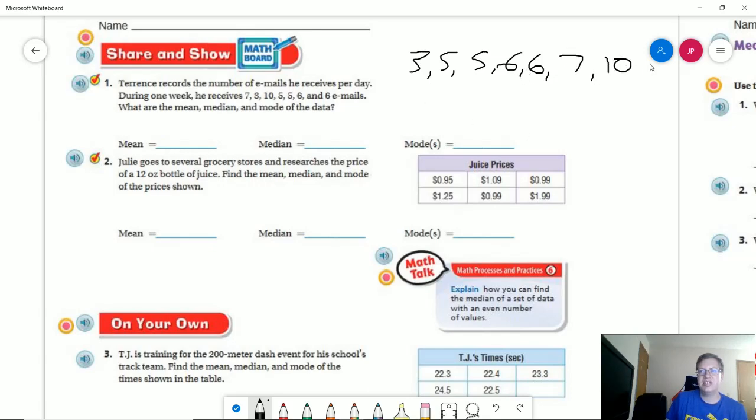I've got 7 data points, assuming that I didn't forget something. And so 6 is going to be my median.